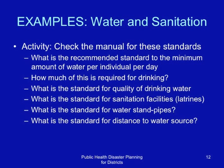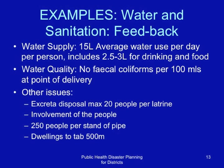Water and sanitation: an average of 15 liters of water for use per day per person, which includes 2.5 to 3 liters for drinking and food. On water quality, the standards specify that the water should have no fecal coliforms in every 100 milliliters. Standards are also provided for excreta disposal — a maximum of 20 people per latrine — involvement of the people in planning the sanitation resources, 250 people per standpipe, and the distance from dwellings to the water standpipe should be less than 500 meters.